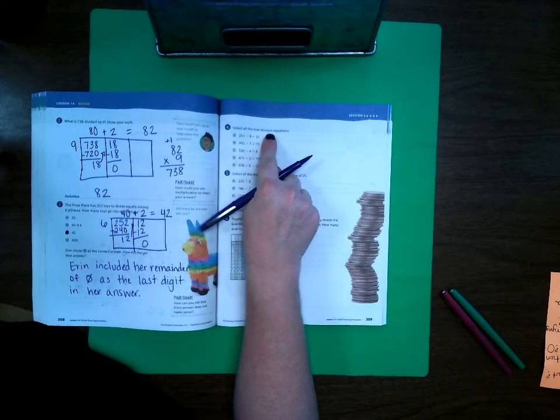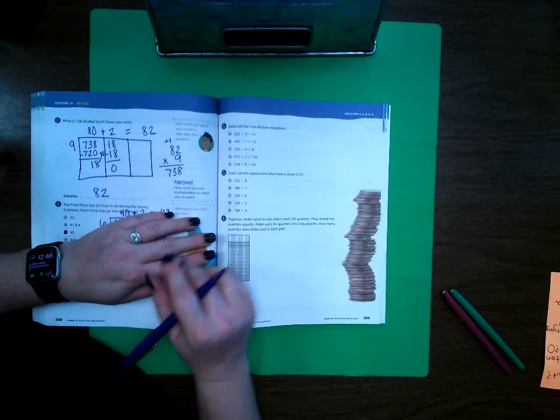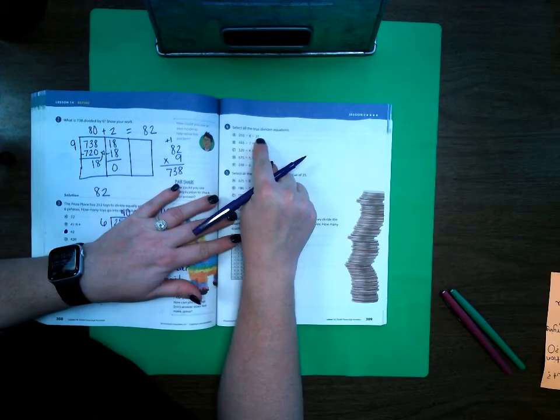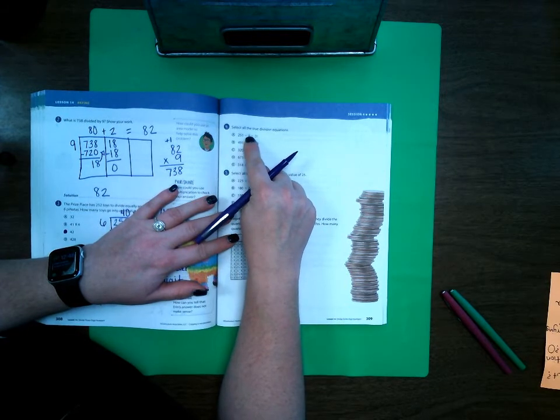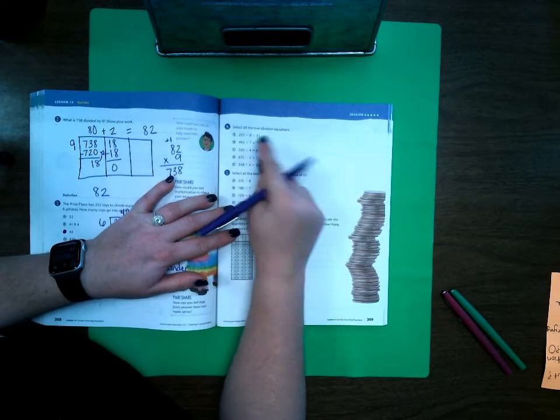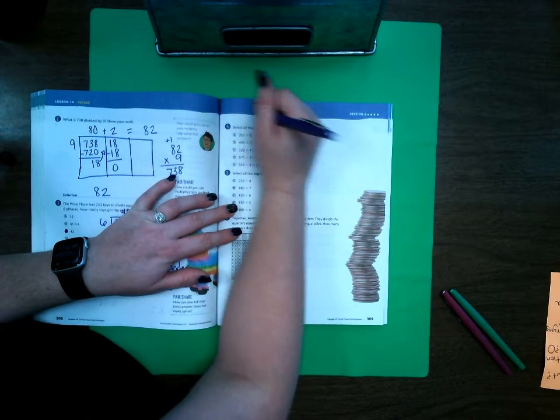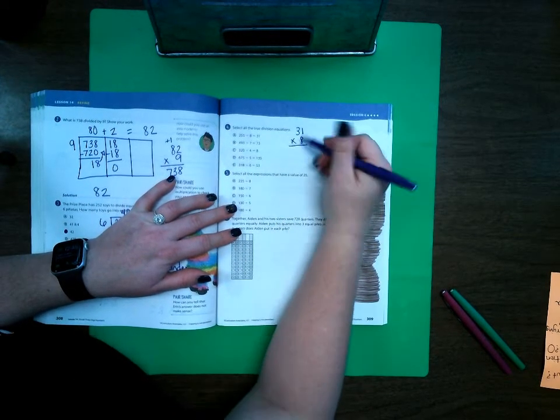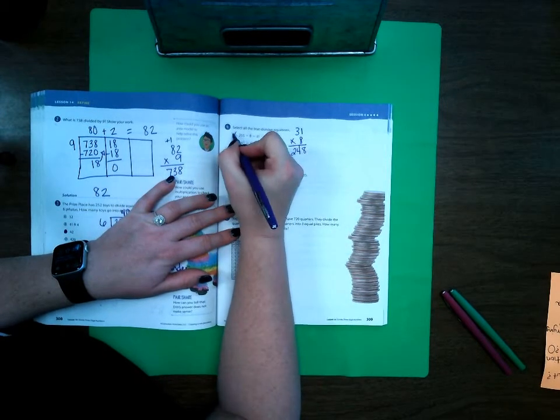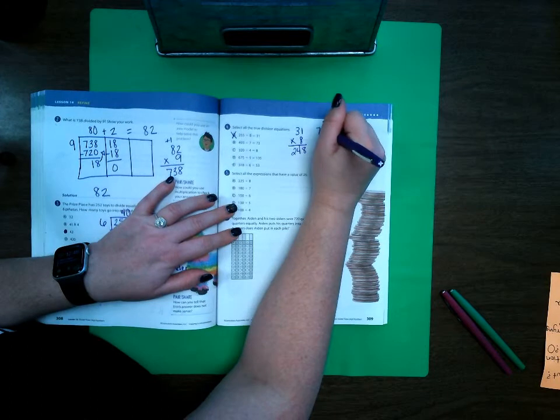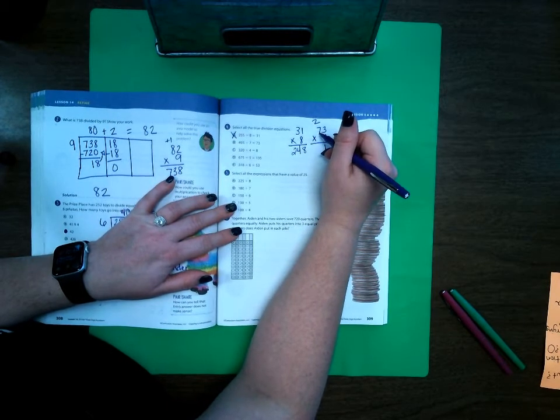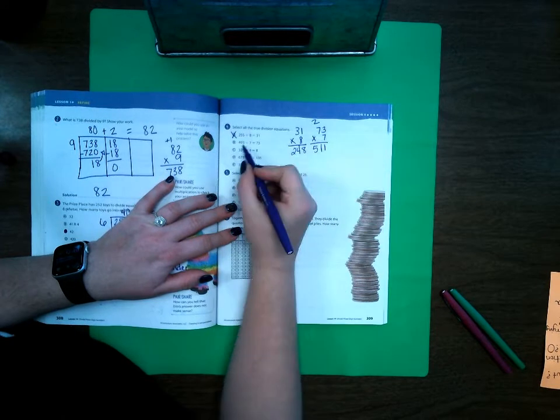Says select all the true division equations. Remember that with division our biggest number needs to be the number that's being divided and then our answer has to be the other, the smaller number times the answer. So I can multiply to check this or I can divide. I'm going to multiply. So my first one is 31 times 8. 8 times 1 is 8, 8 times 3 is 24. Well that doesn't match. OK 493 divided by 7, 73 times 7. 7 times 3 is 21, 7 times 7 is 49 plus 2, 50, 51. That does not match.